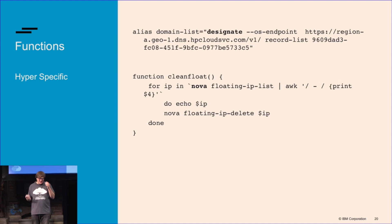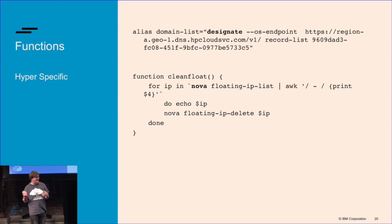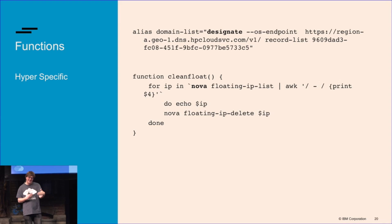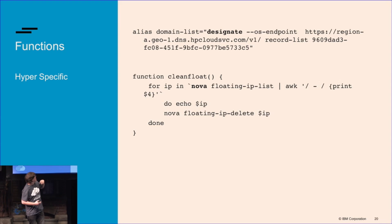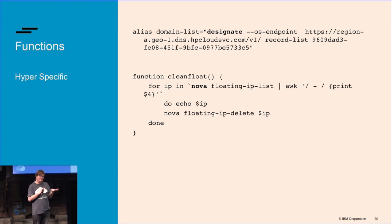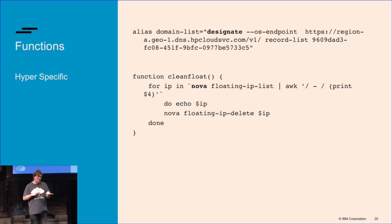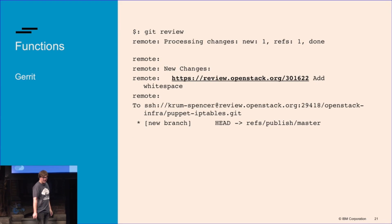I work on OpenStack, so there should be some OpenStack in the talk. Designate is the DNS part of OpenStack, and if you want to know all the domains you've set, you have to type that gross thing. I put it in an alias because I didn't want to deal with it. So aliases actually move out of just convenient commands and into holding data for me that I don't want to keep in my head — same with 'clean-float.'